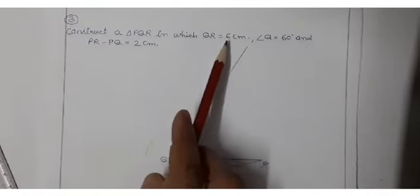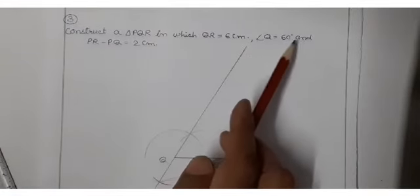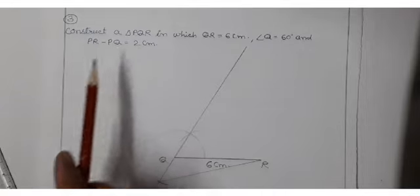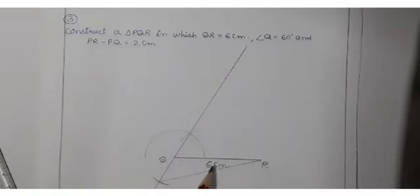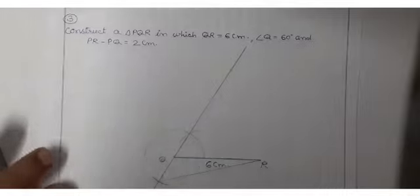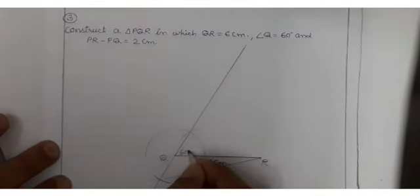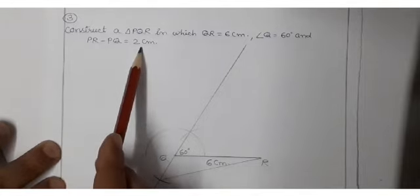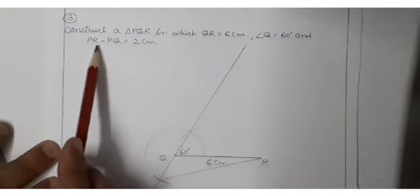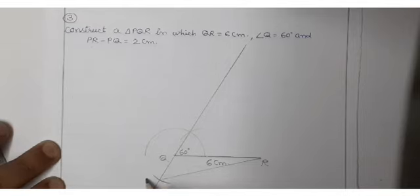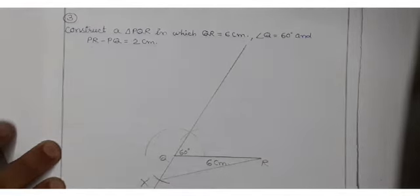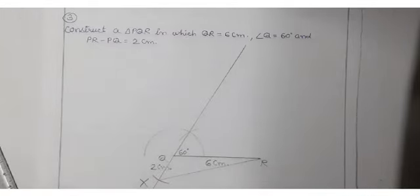Question number 3: Construct a triangle PQR in which QR is equal to 6 centimeter, angle Q is equal to 60 degrees, and PR minus PQ is equal to 2 centimeter. First make line segment QR of 6 centimeter, then make 60 degrees at point Q with help of compass. Since PR minus PQ is 2 centimeter, extend the line downward from Q and mark point X by cutting an arc of 2 centimeter from point Q.